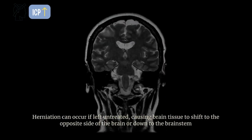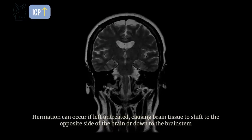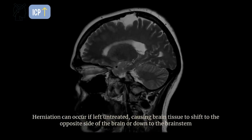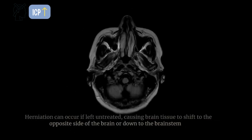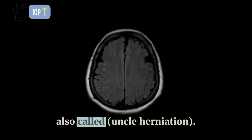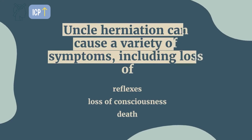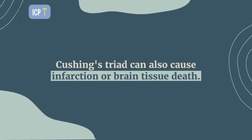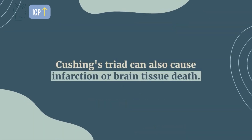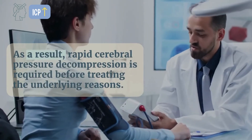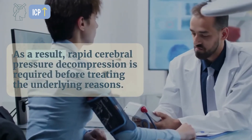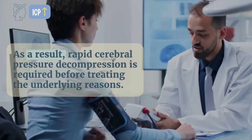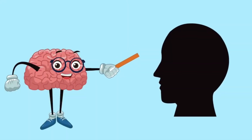Herniation can occur if left untreated, causing brain tissue to shift to the opposite side of the brain or down to the brainstem, also called uncal herniation. Uncal herniation can cause a variety of symptoms including loss of reflexes, loss of consciousness, and death. Cushing's triad can also cause infarction, or brain tissue death. As a result, rapid cerebral pressure decompression is required before treating the underlying causes.